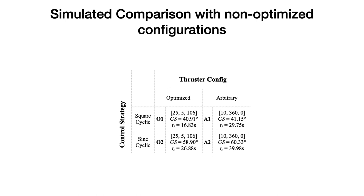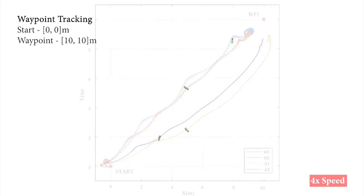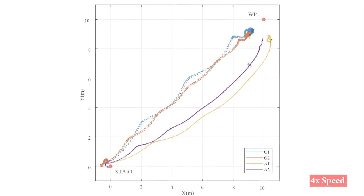It is compared with the non-optimized configurations to evaluate its performance. An arbitrary configuration denoted by A is compared with optimized configuration denoted by O. Both square cyclic control and sine cyclic control are used, denoted by 1 and 2 respectively. A simple waypoint tracking using P controller is simulated. It can be observed that O1 reaches the waypoint fastest, although slightly larger precession circles can be observed for both O1 and O2.